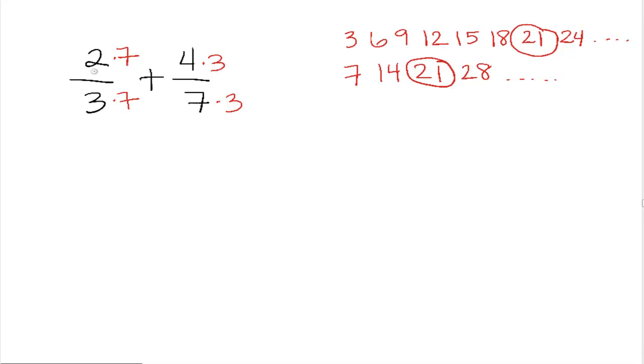So now I'm going to rewrite this fraction on top. We have 2 times 7, which is 14. On the bottom of the fraction, we have 3 times 7, which is 21. And this fraction on the top, we have 4 times 3, which is 12. And the bottom, we have 7 times 3, which is 21.